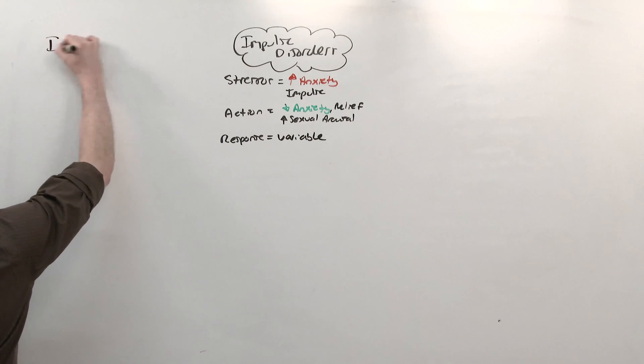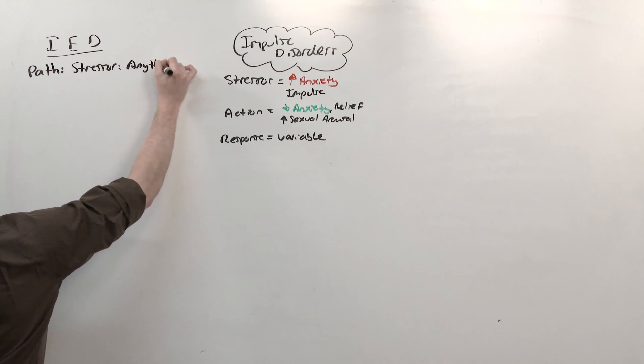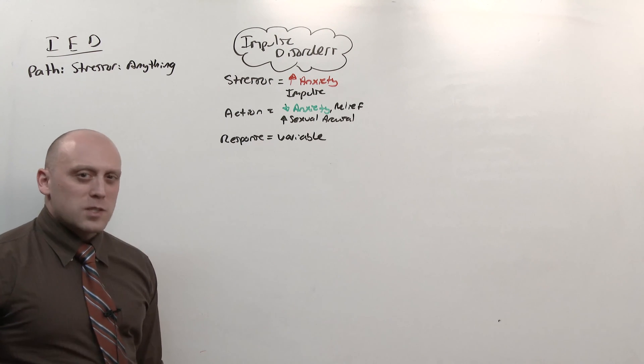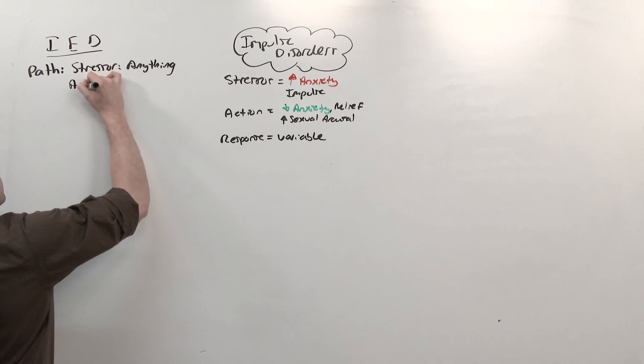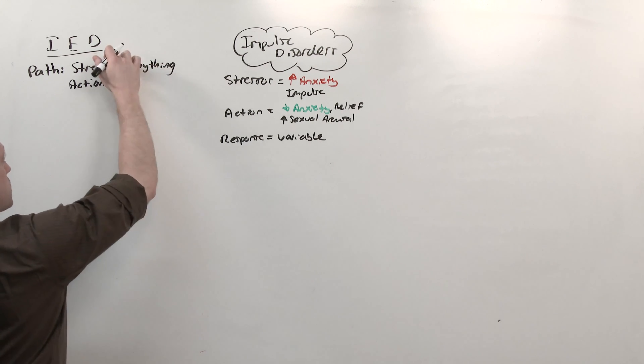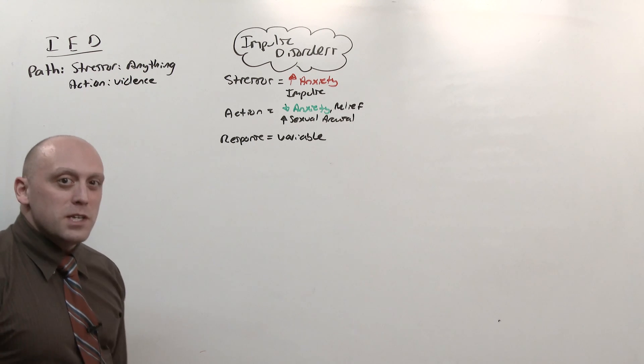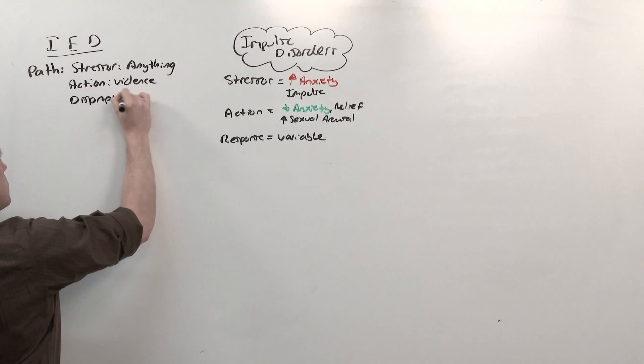Let's start with intermittent explosive disorder. In this case, the stressor can be anything. Usually, it's a violation of personal space, or an emotional or psychological attack, someone being aggressive. The action that reduces the anxiety brought on by that stressor is violence. And almost always, the degree of violence is disproportionate to the stressor.